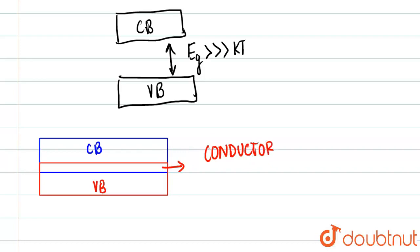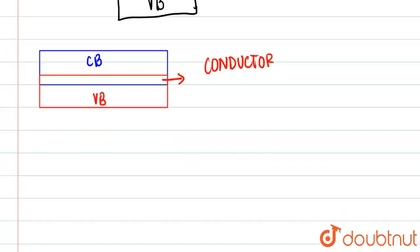And for a semiconductor there is one thing that basically the band gaps do not coincide but there is one thing that basically if this is let's suppose the conduction band, so the valence band will be absolutely below it. This valence band will be somewhat over here.